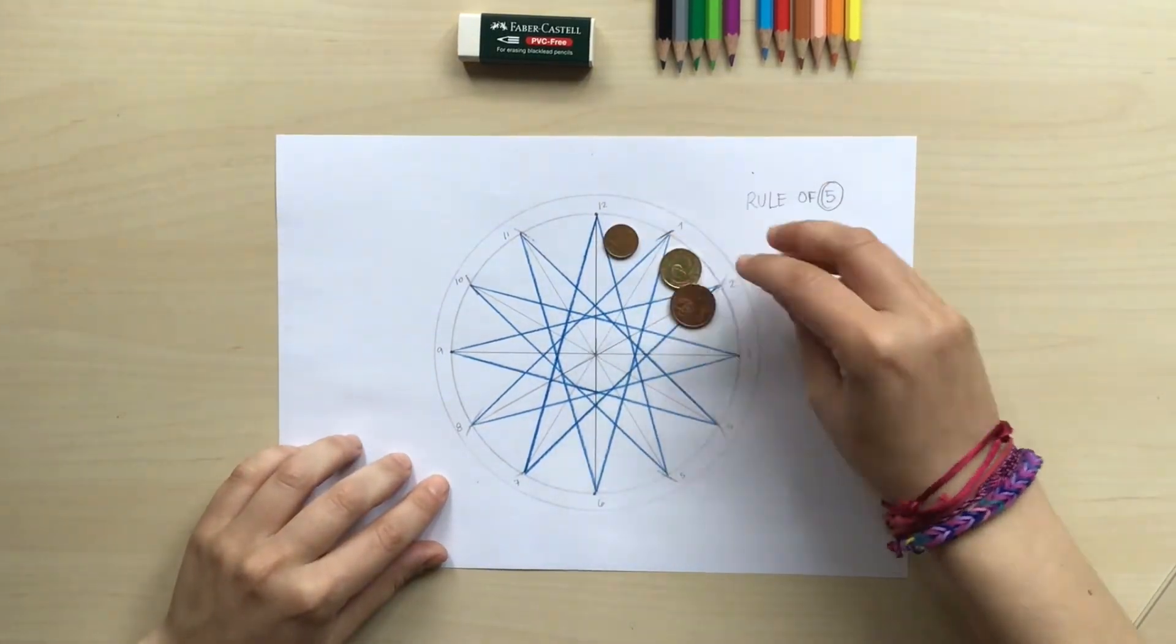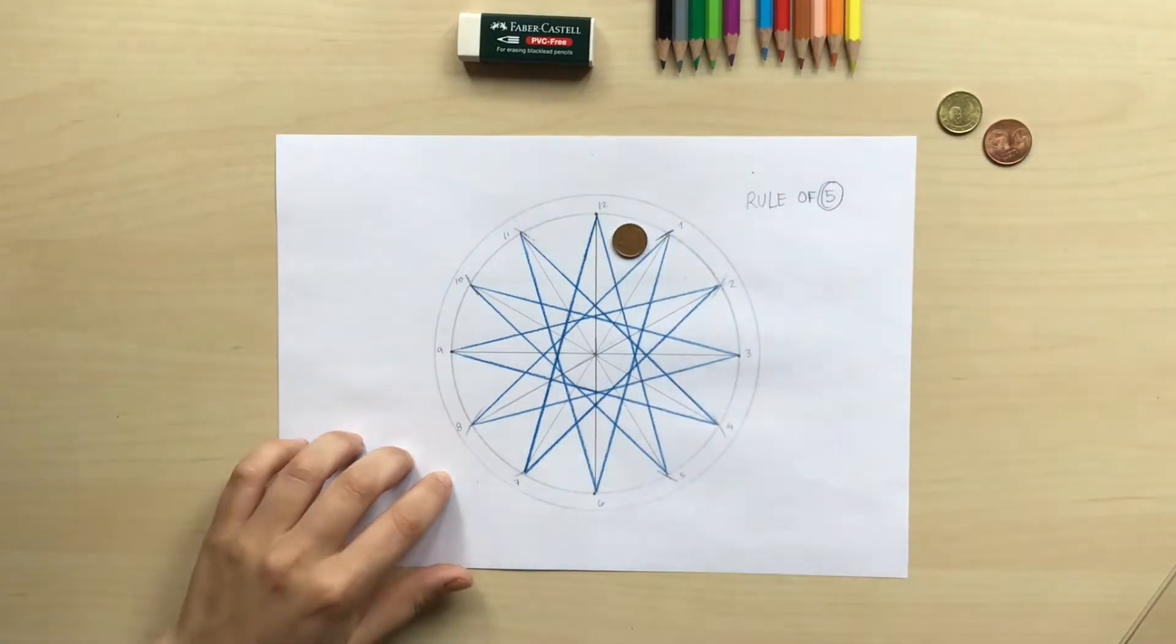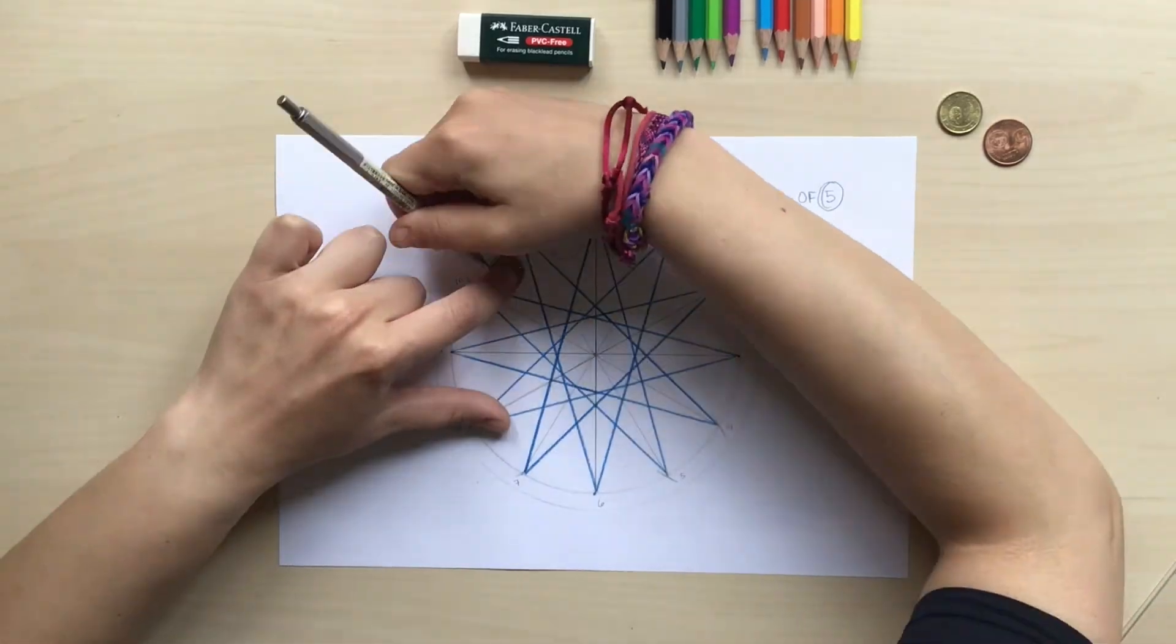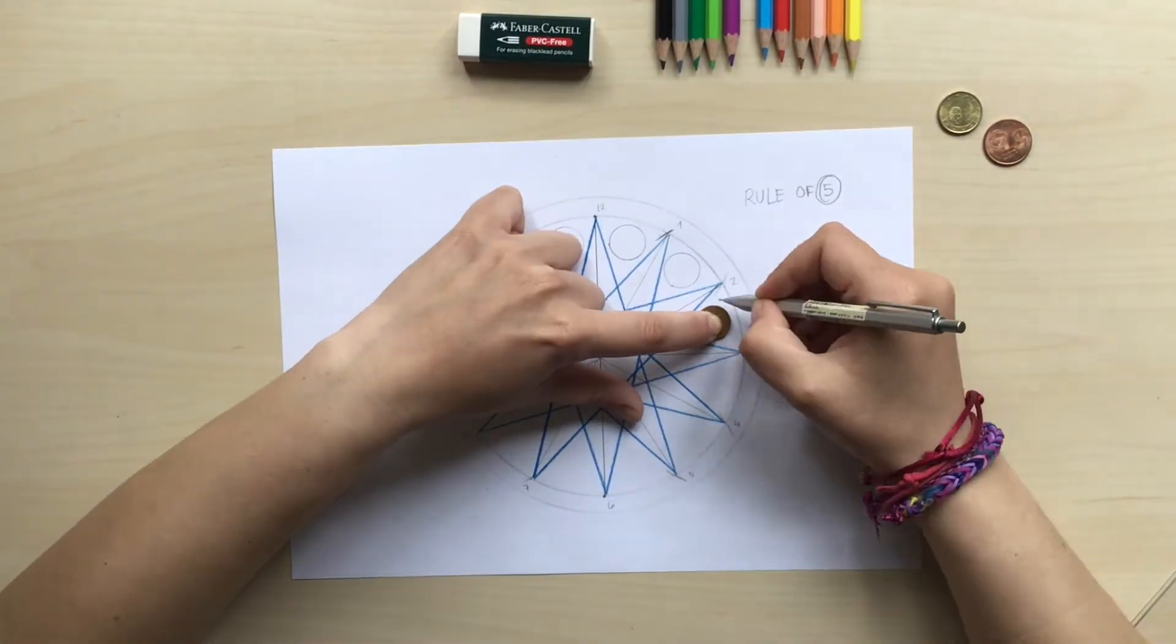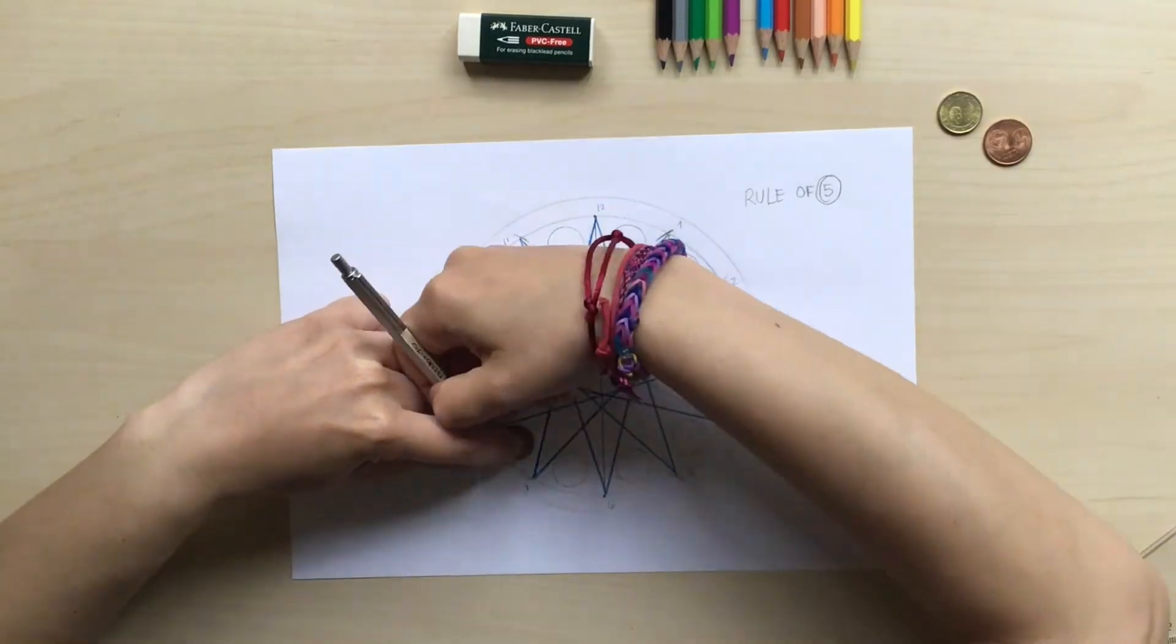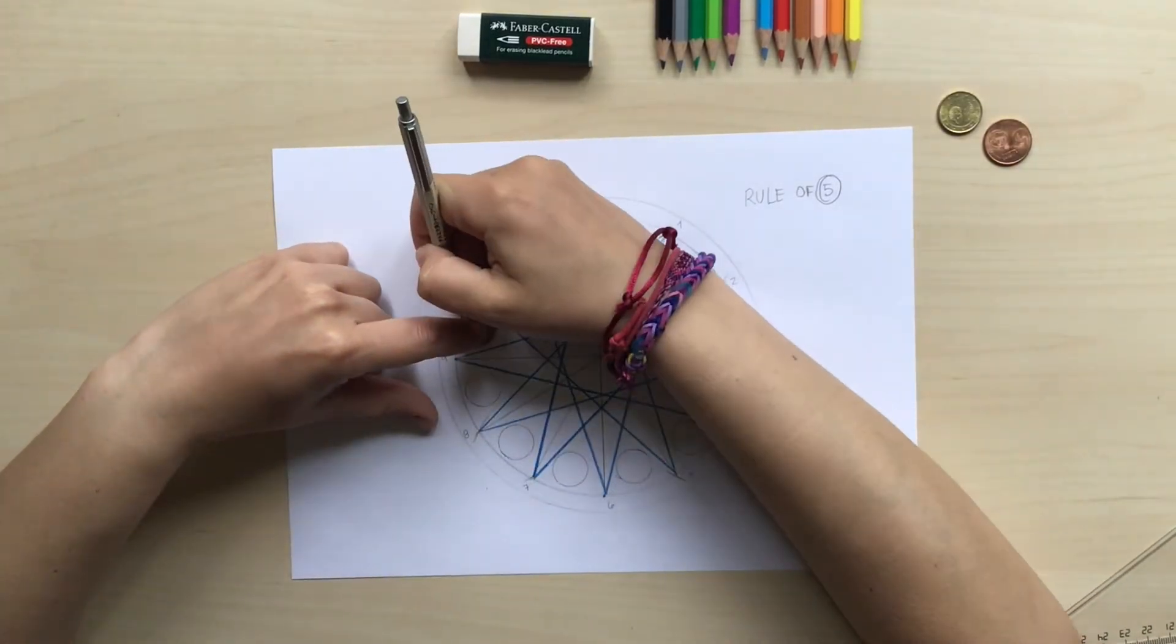Now I wanna make little circles between all those dots and for that I'm gonna use coins that I have at home. In my case I'm using 1 cent coins. You can do this with your compass but I find it easier to do it with these coins. It's a little bit of cheating but I mean it doesn't matter.